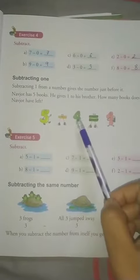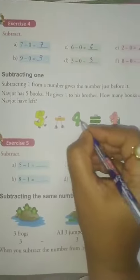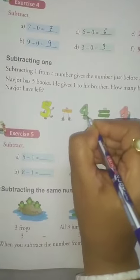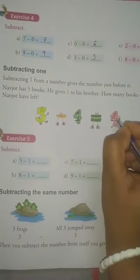So, 5 minus 1. Here, 4 is written. It is wrong. You make it correct. You have to write here 1. 5 minus 1 is equal to 4.